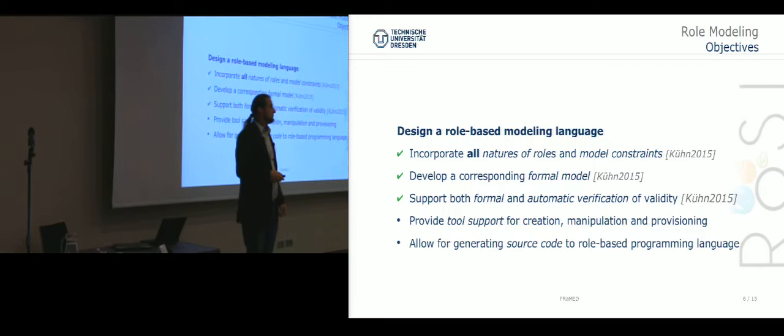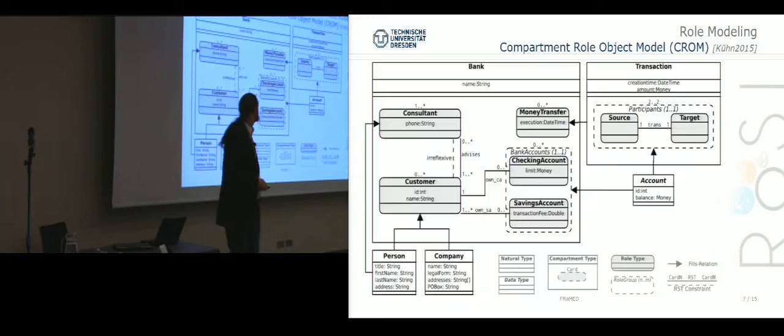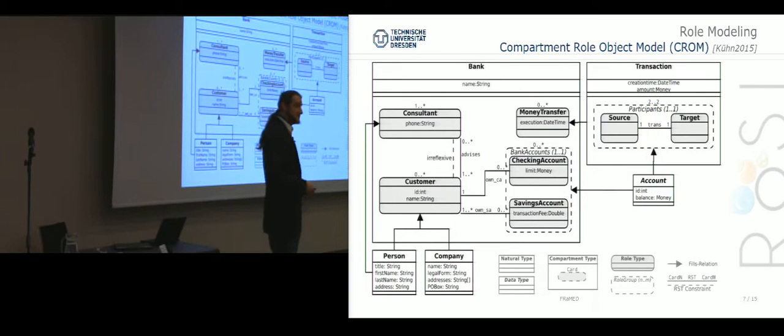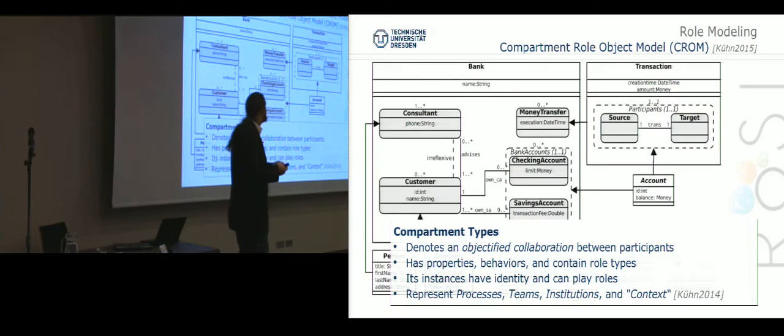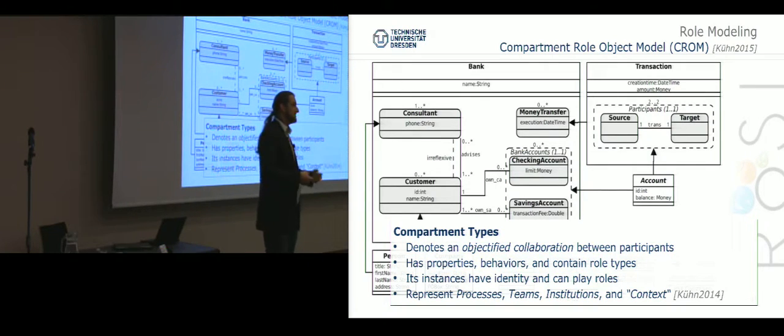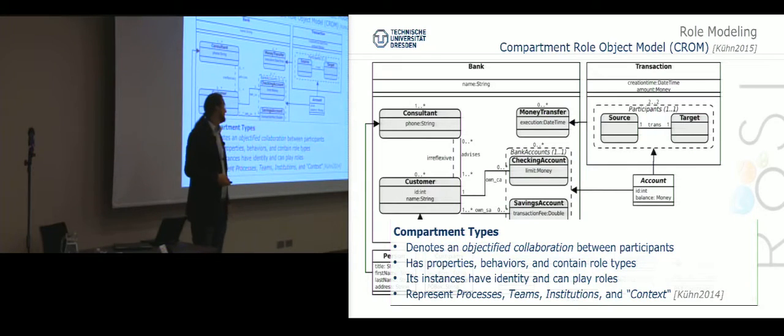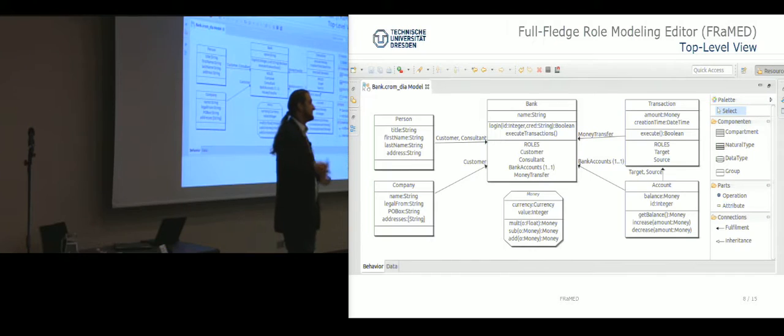This is a model of a banking application. Here we have a financial institution, we have consultants and customers. Now we have a separate entity, a transaction, and this encapsulates the process of transferring money from one account to another account. These boxes are denoted compartment types. These are the objectified collaborations. With this we can talk about context or situations or a process or teams as an object.